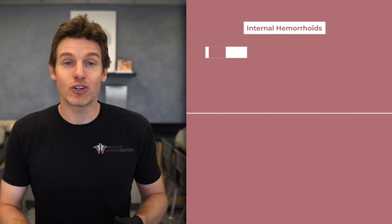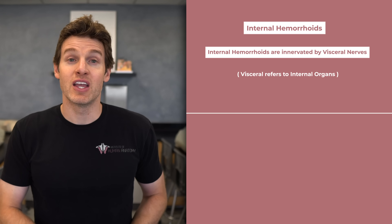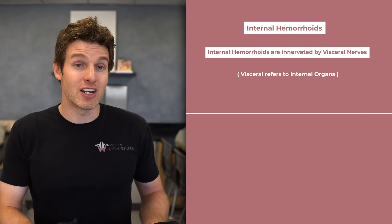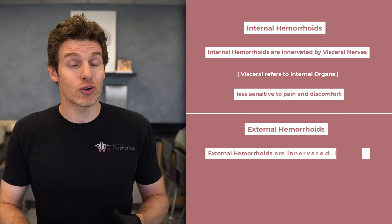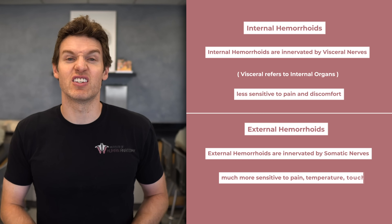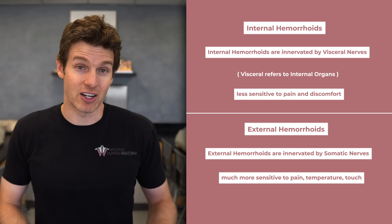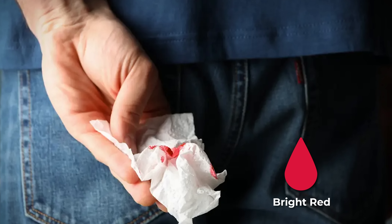Internal hemorrhoids are associated with less pain and discomfort compared to external hemorrhoids because they are innervated by different nerves. Internal hemorrhoids are innervated by visceral nerves — organ structures innervated by visceral nerves are often less sensitive to pain. External hemorrhoids are innervated by somatic nerves, which are much more sensitive to pain, temperature, and touch. The bleeding from hemorrhoids is usually bright red and might be noticed on the toilet paper, in the toilet bowl, or as a blood streak on the stool.